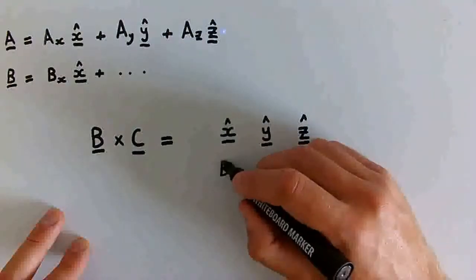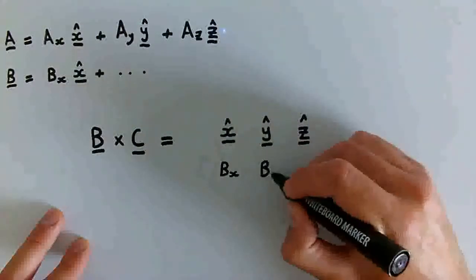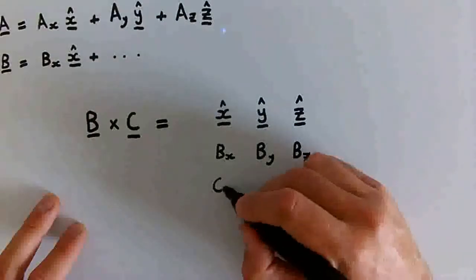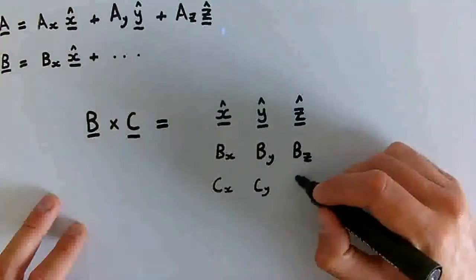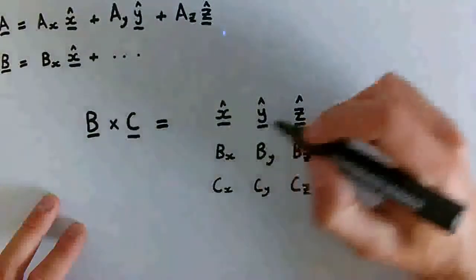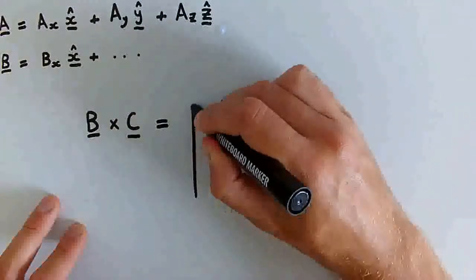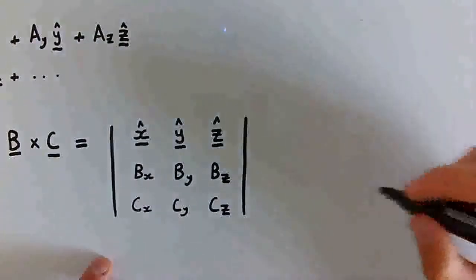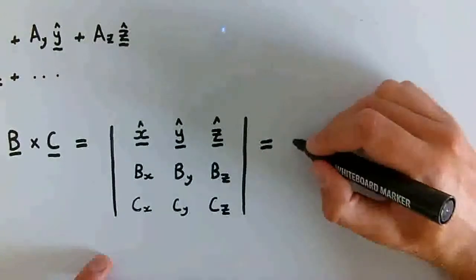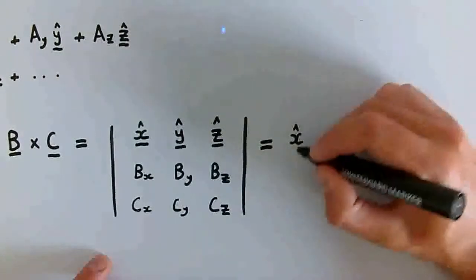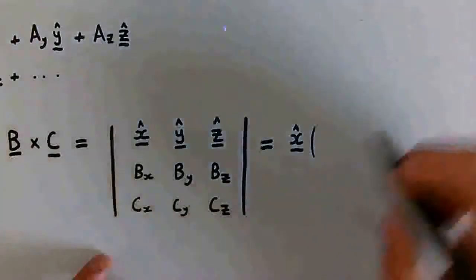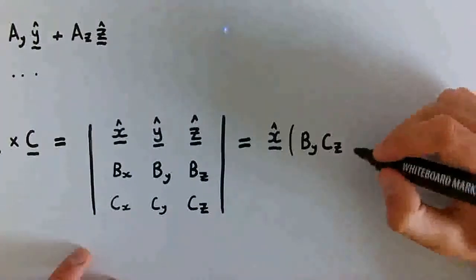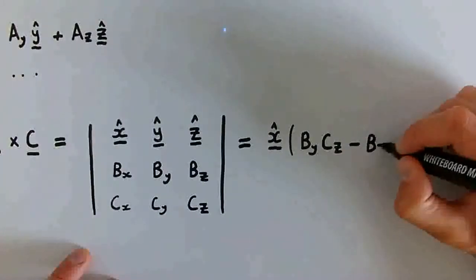In the determinant we have Bx, By, Bz in the second row, and Cx, Cy, Cz in the third row. Working this out as we normally would, we start with the x-hat component: By·Cz minus Bz·Cy.